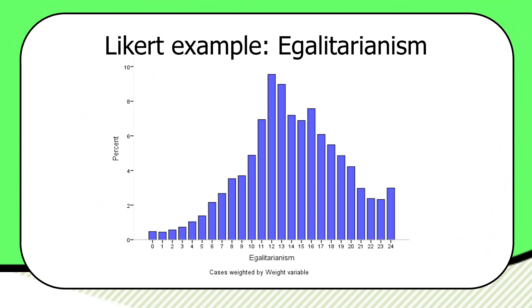It's an open secret, really, in political science that when we get real nice Likert scales or ordinal scales like this, we pretend that they are interval level scales.